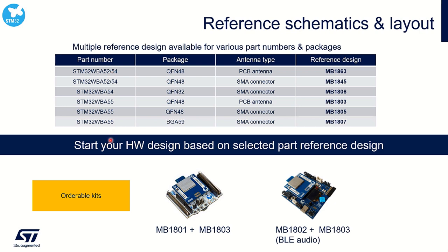On top of those reference designs, you will be able to order two evaluation kits for prototyping and evaluation. The first one is composed of the MB1801, the mezzanine board, which plugs on top of the MB1803 — the mini board composed of the STM32WBA55 in QFN48 package. The second orderable kit is focusing on BLE audio.